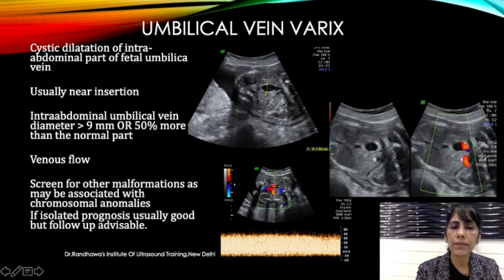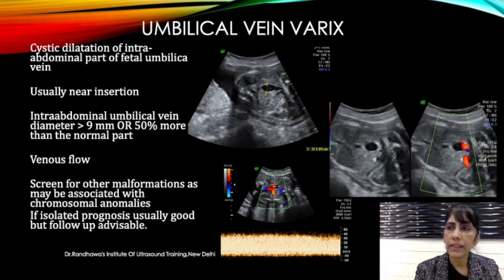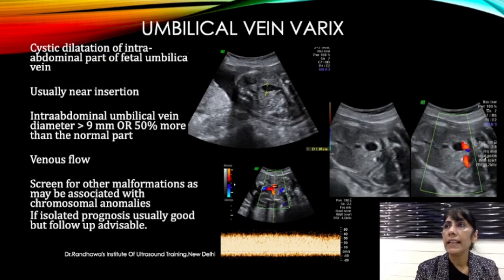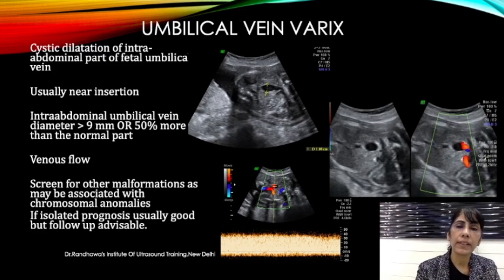Once you put color, you can apply spectral Doppler and you will notice it shows the typical venous flow as seen in the umbilical vein, which confirms all your findings. Diagnosing or searching for this is not difficult. The only confusion is what cutoff to use — either more than 9 mm, or more than 50% dilated compared to the normal portion of the vein.